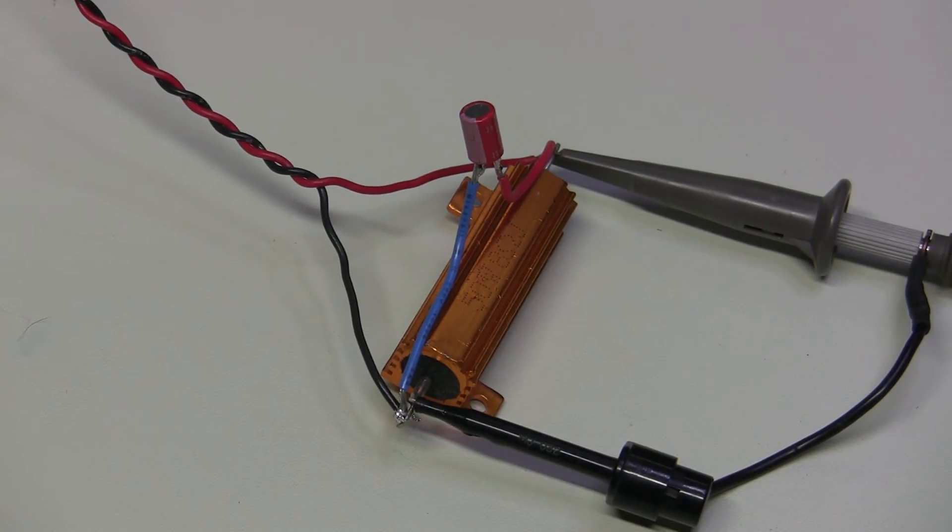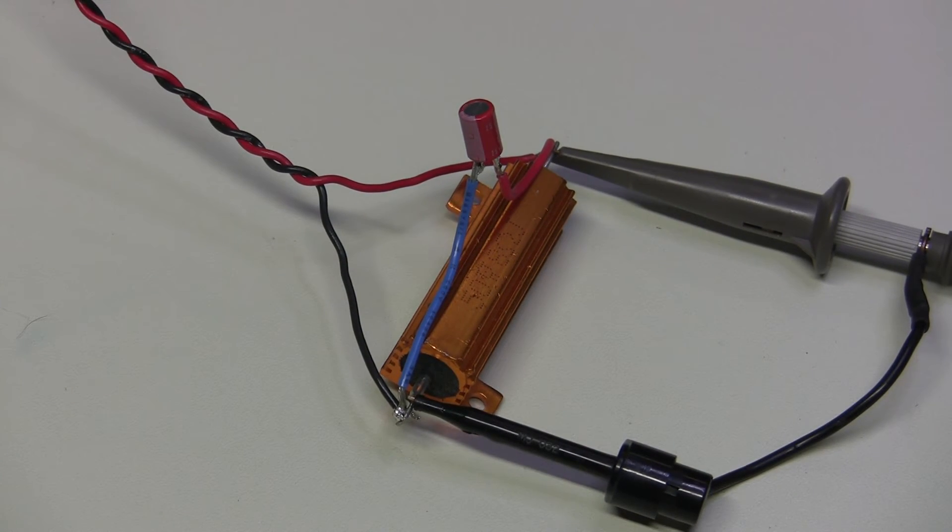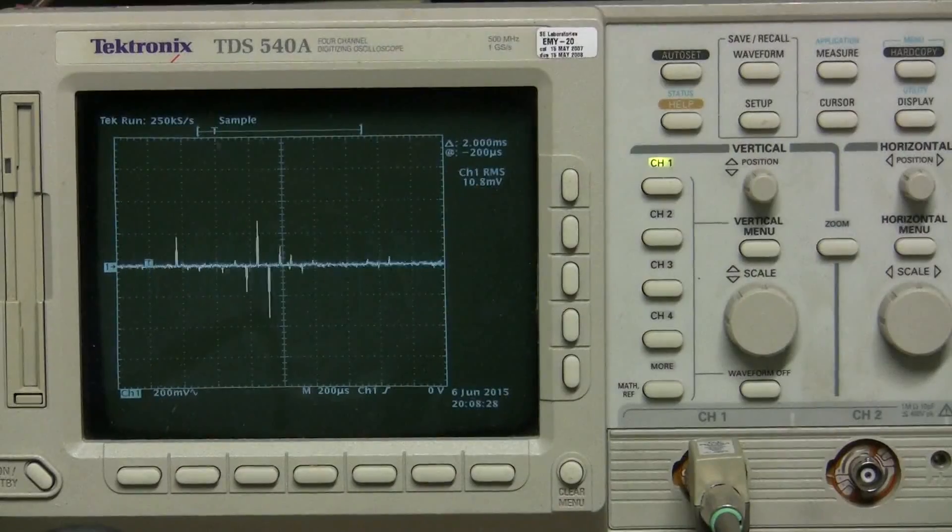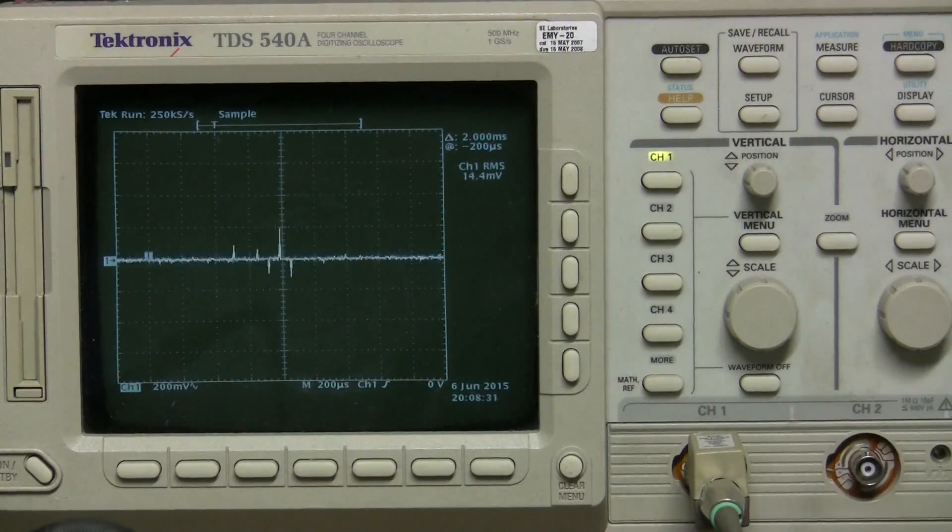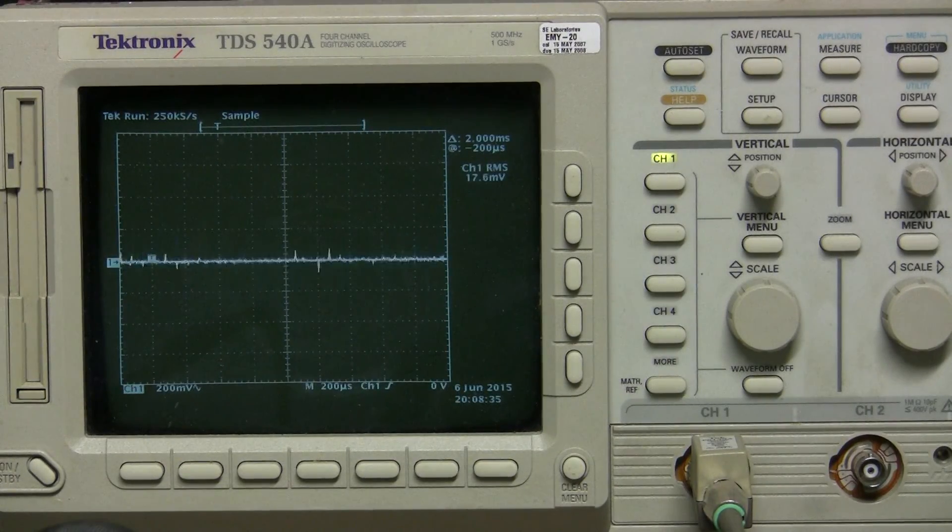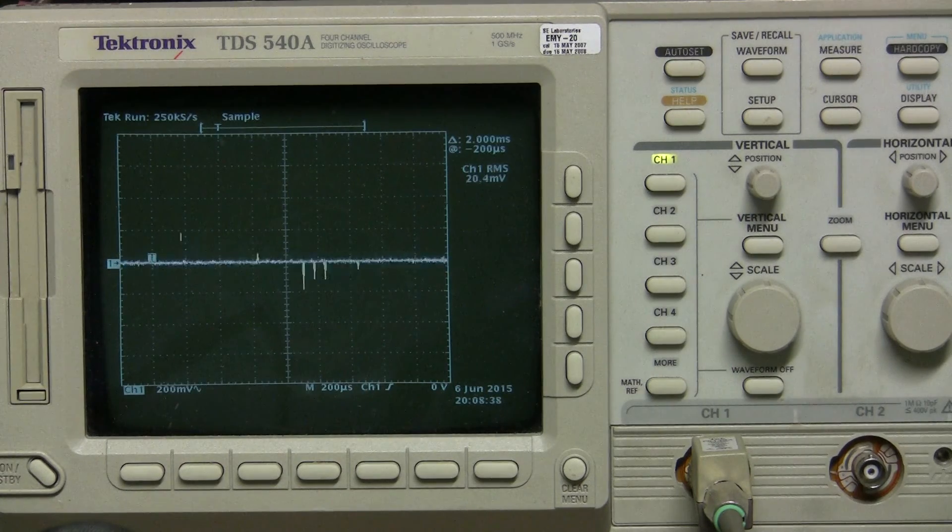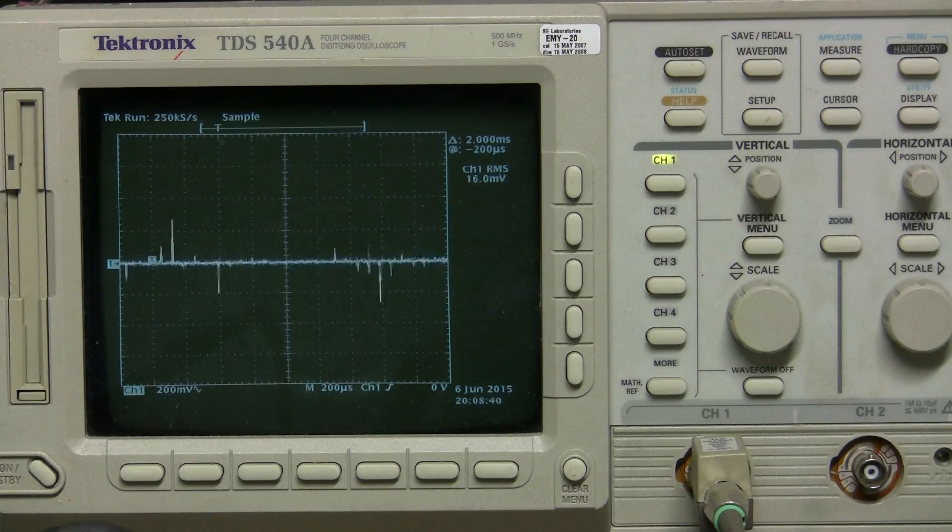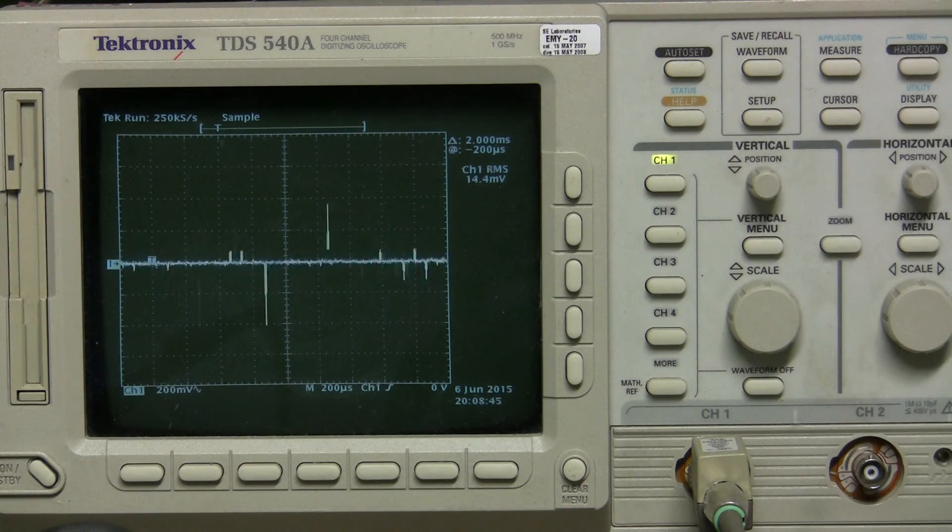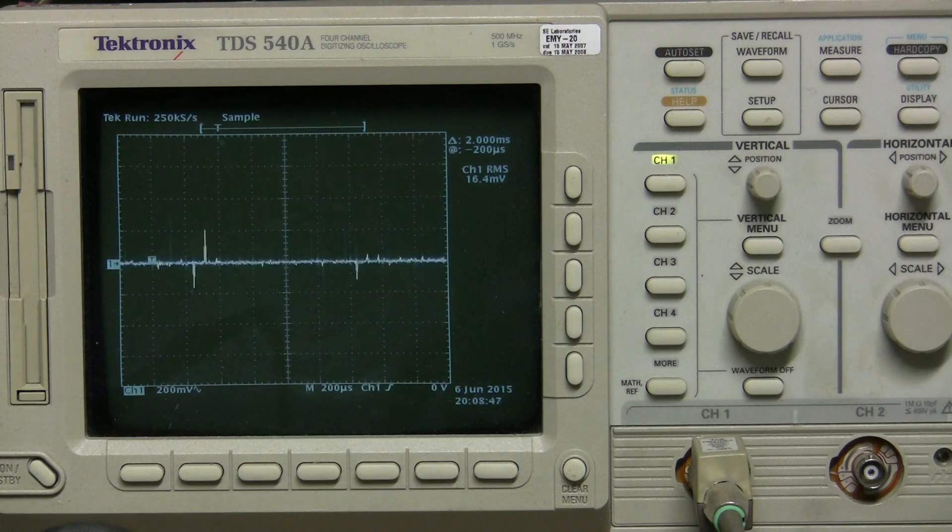Here I added 15 microfarad low ESR capacitor. Let's have a look now. It looks a bit better, those spikes look a bit lower, and the RMS measurement is jumping from minimum of seven or eight to maximum of 26. I believe I've seen 28, so it looks a bit better but still a lot of noise.